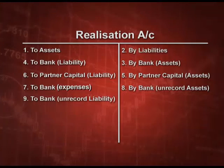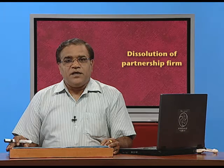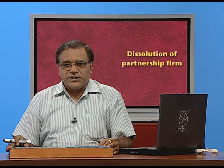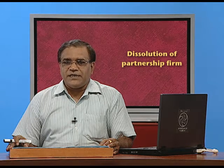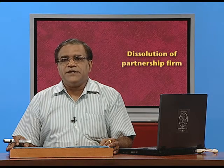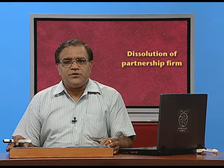We are positive people, so we take it into account that there is a profit. Profit will come on the debit side, because if the credit side is more and the debit side is less, profit will come on the debit side and it will be transferred to the partner's capital account. The entry will be realization account debit to partner's capital account. After preparing the realization account, the next step will be to prepare the capital account, as we had already discussed in admission, retirement and death, so there is no need to do it again.